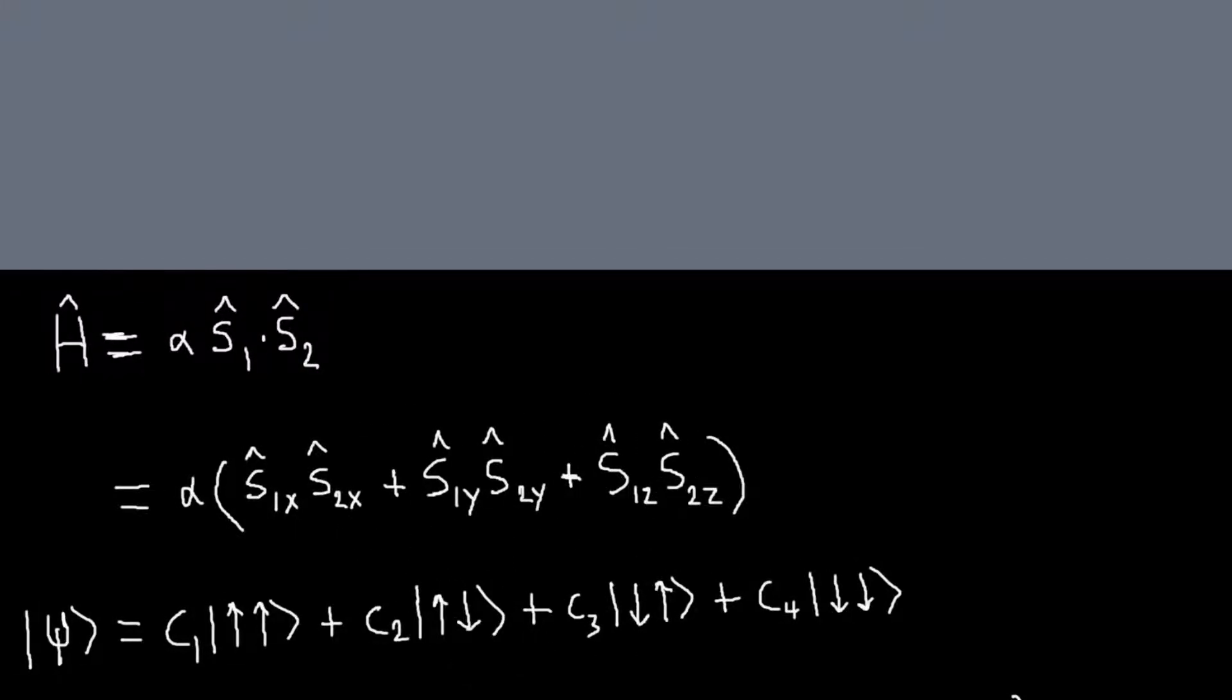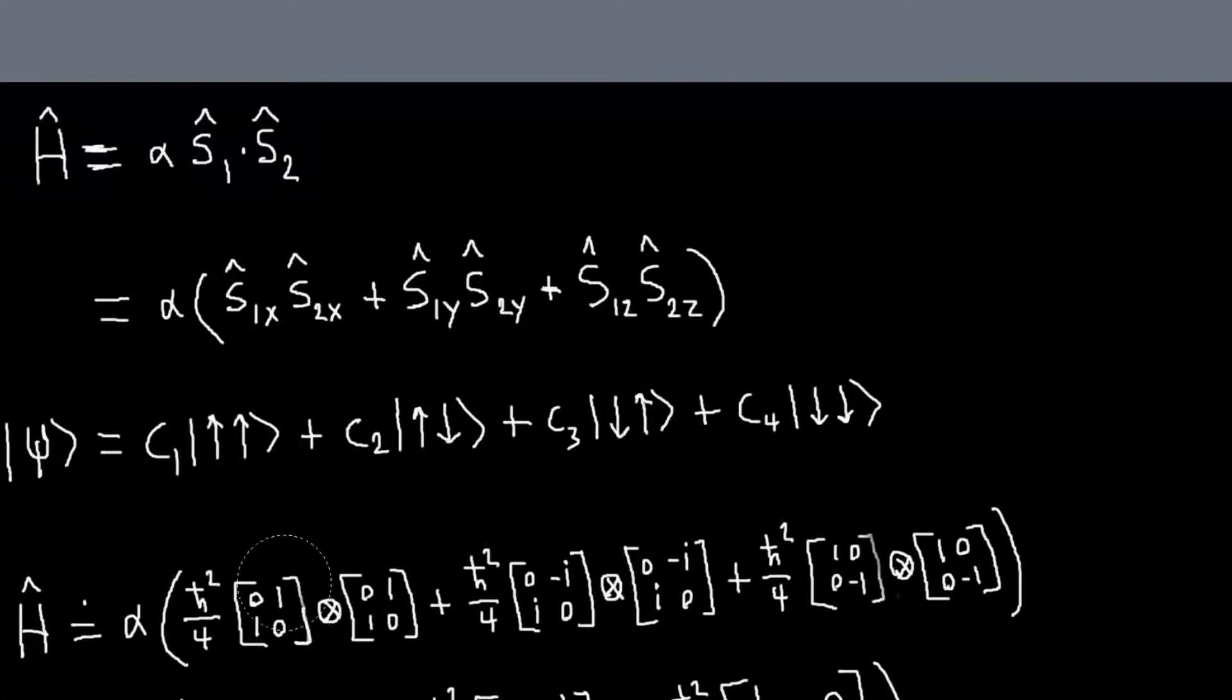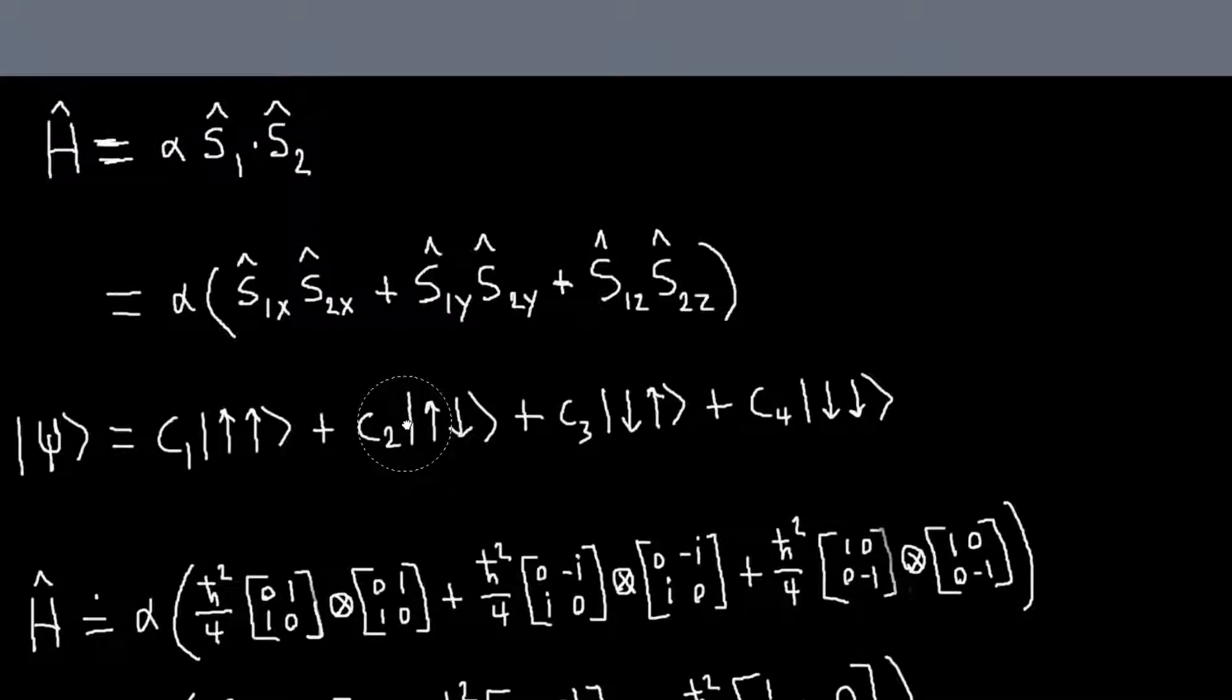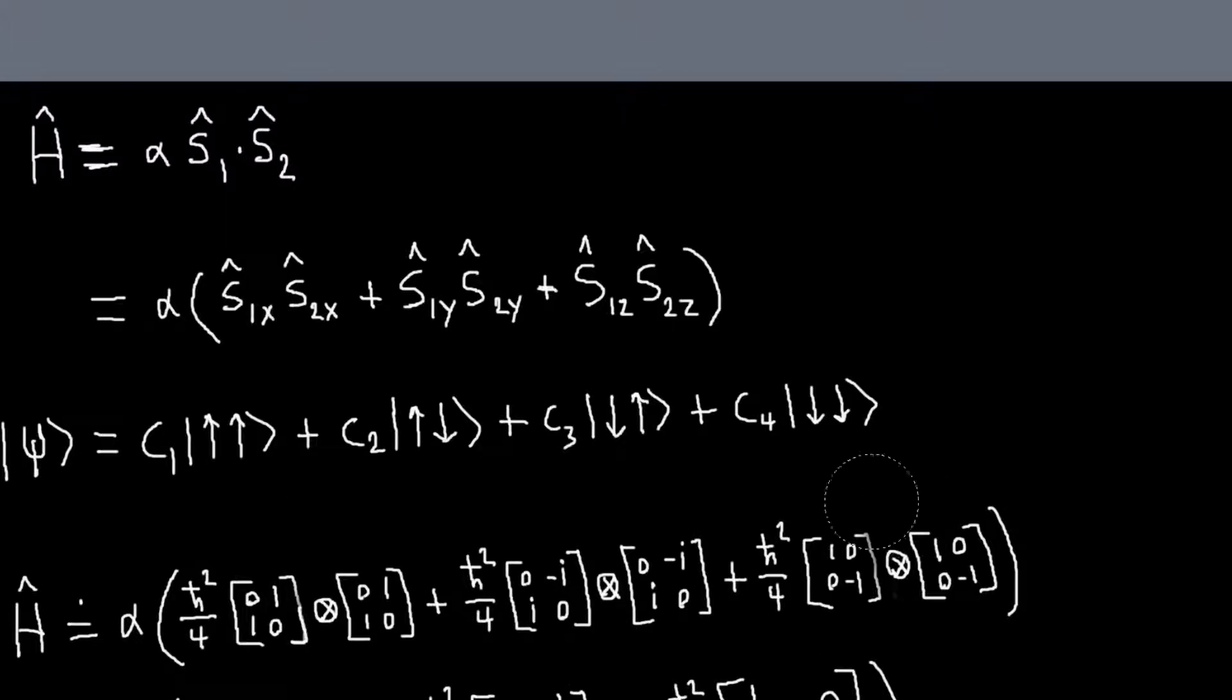So instead, what we'll do is work with the representations, because we know how to do that now. When we write these products here, we mean Kronecker products, and each of these operators is represented by two-by-two matrices. When I represent my Hamiltonian in this basis, it will look like this.